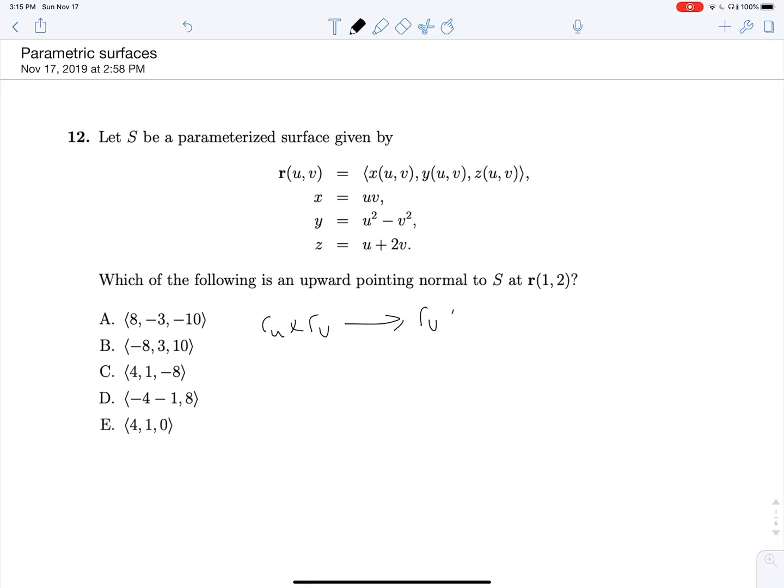Or it could be RV cross RU, because let's say we have some plane. We have two normal vectors, one coming up out of the plane and one going down out of the plane, and they are both normal to the plane. It just depends which order we cross them in.